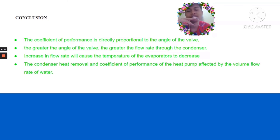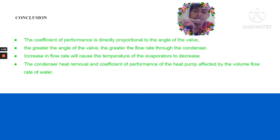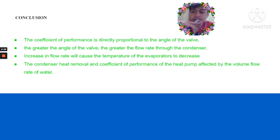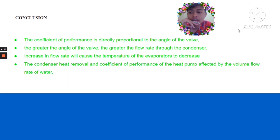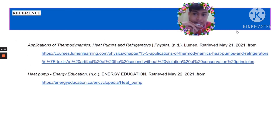My name is Mama Arizaam and I will present the conclusion. Throughout this heat pump experiment, we conclude: first, the coefficient of performance is directly proportional to the angle of the valve; second, the greater the angle of the valve, the greater the flow rate through the condenser; third, an increase in flow rate causes the evaporator temperature to decrease; and fourth, the condenser heat removal and COP of the heat pump are affected by the volume flow rate. Thank you.